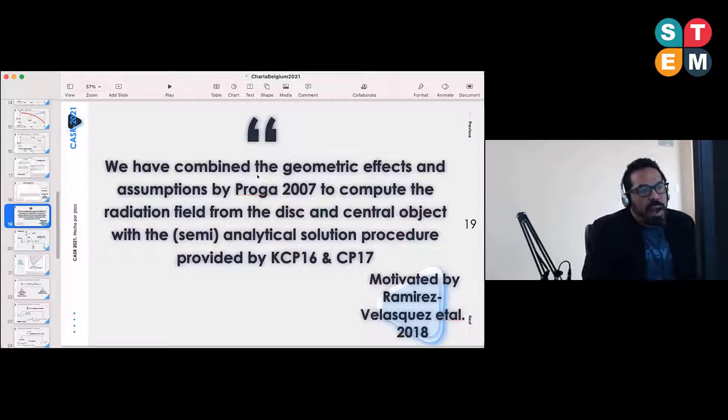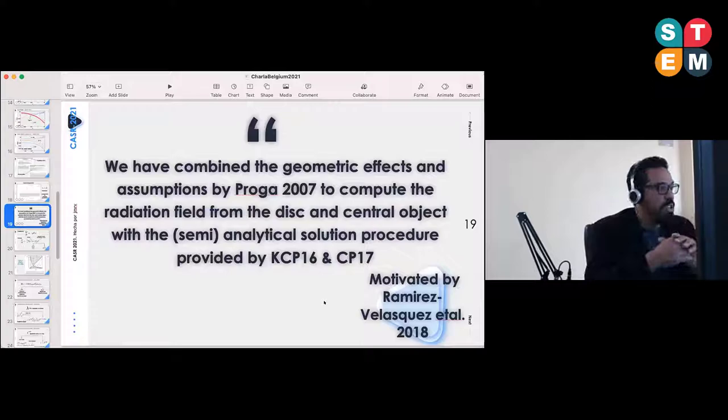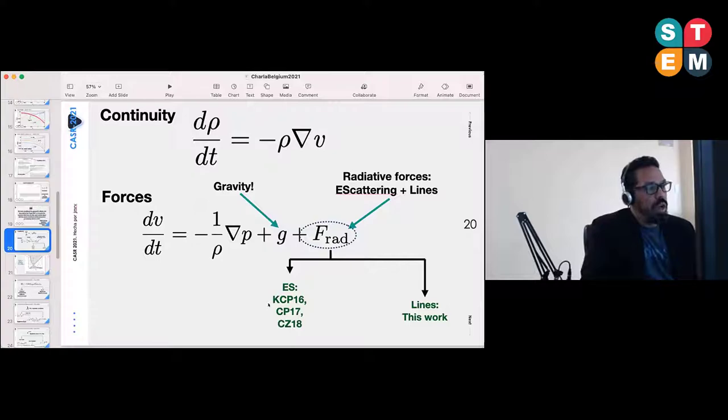This is our plan in general. We have combined the geometric effects and assumptions given by Proga 2007 to compute the radiation field from the disk and central object, with the semi-analytical solution procedure provided by Shcherbakov and company. This is somehow motivated by some work we did before using SPH simulations where as an initial condition you actually need to give velocity profiles and density profiles to start the dynamical evolution of the system.